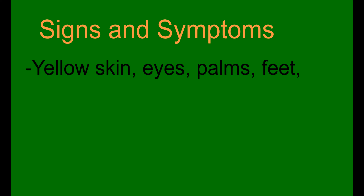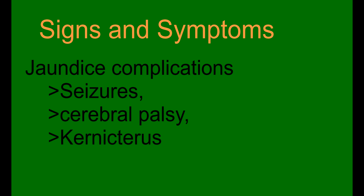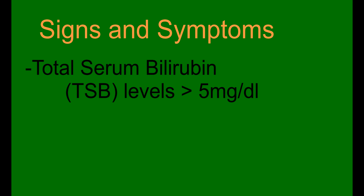The signs and symptoms of neonatal jaundice include yellow skin, eyes, palms and feet, dark yellow urine, and jaundice complications such as seizures, cerebral palsy and brain damage. Total serum bilirubin levels greater than 5 mg per deciliter are also indicative.